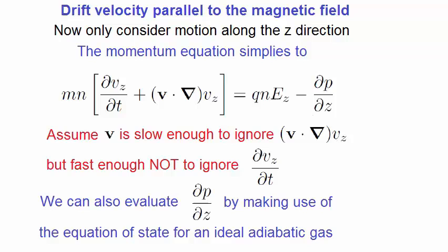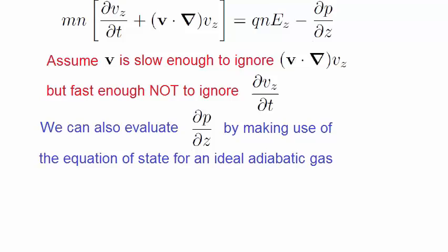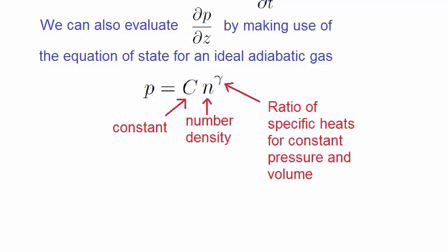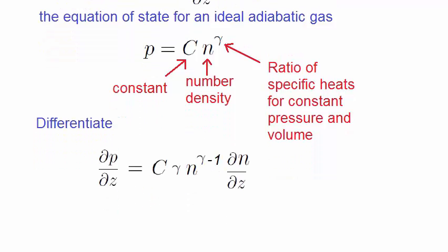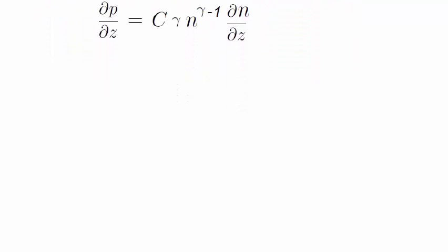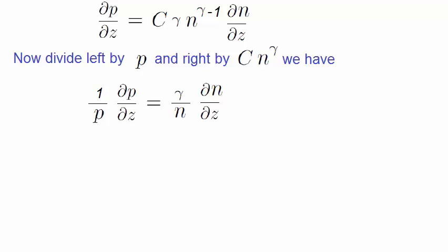We also need to evaluate the gradient in pressure, dp dz, by making use of the equation of state for an ideal gas, given by this, where c is a constant, n is the number density, and γ is the ratio of the specific heats for constant pressure and volume. Now let's differentiate both sides of the equation, so that we can have an expression for dp dz. Let's now divide both sides by the equation of state, that is, divide the left by p, and the right side by cn to the power of γ.